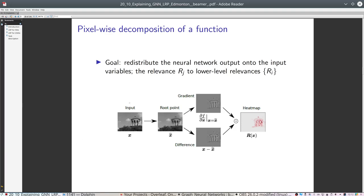In practical terms, consider an input image containing a building, where the network classifies images as containing or not containing the building. The root point can be found by adding noise to the input image or occluding the decisive parts, producing an image very similar to the original but classified as not containing the building, with f(x) equal to zero. We then compute the gradient at this root point, compute the difference with the original image, and produce the heat map. This is a simplified explanation for learning purposes, illustrating the basic idea behind how LRP was developed by the TU Berlin group.